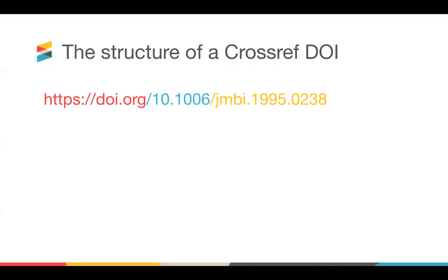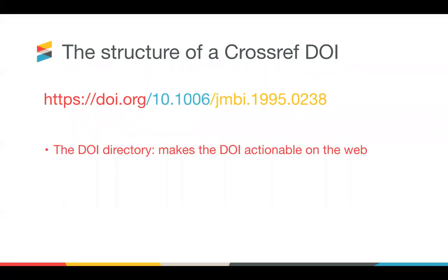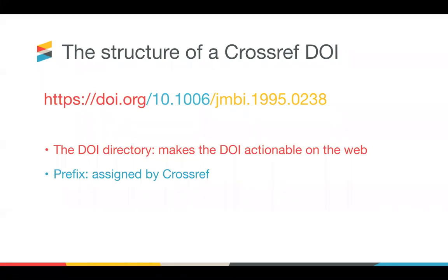So a bit about the structure of a Crossref DOI. A DOI is comprised of three sections. The first part is the resolver address — each DOI is an identifier, but it is also an actionable link, which means that it's resolvable in a browser; when you click on it, it will take you to the page. The second part is the prefix, which is what is assigned to each member when they join Crossref, usually in the format of '10.' followed by five numbers. In some journals you may see DOIs with prefixes that only have four digits, but they've had five digits since 2012.